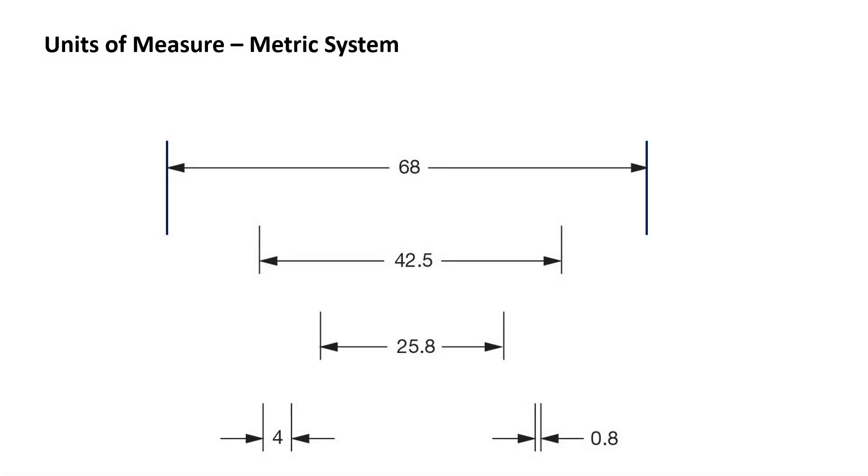The metric units typically used on engineering drawings are the millimeter. Just like in the inch unit measuring system, the numerals to the right of the decimal indicate the degree of precision. Whole numbers do not require a zero after the decimal in the metric system.